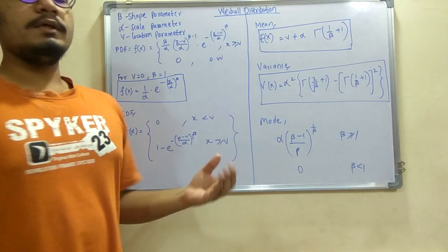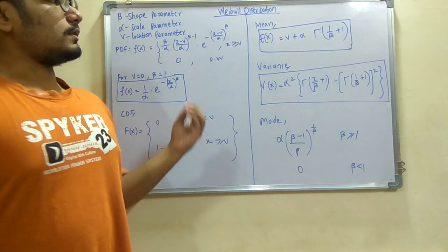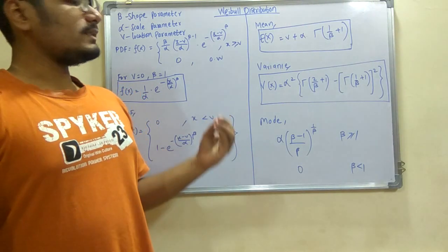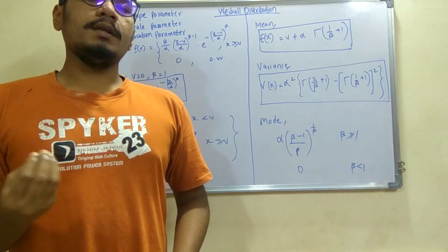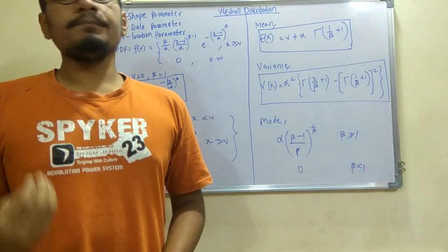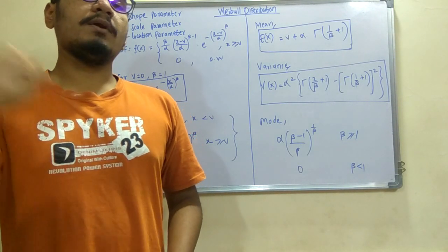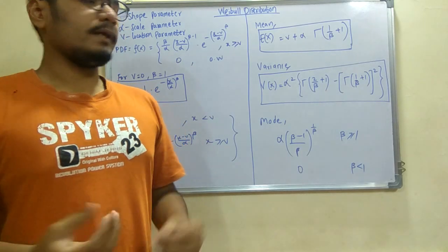So first of all, why is this variable distribution used? Variable distribution is used mainly for reliability engineering and since it is reliable for many other continuous distributions.